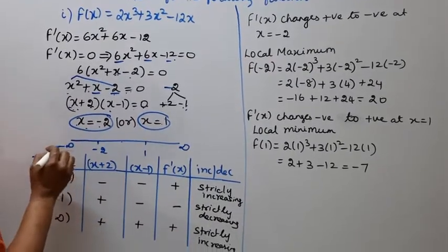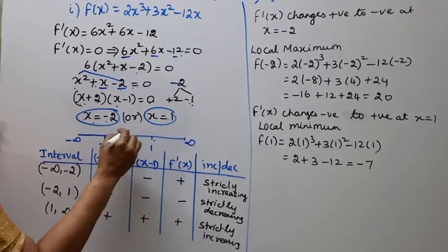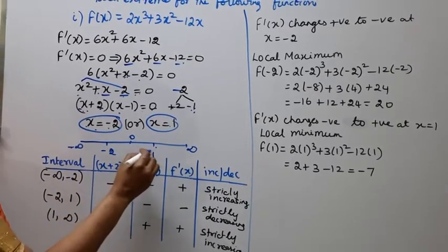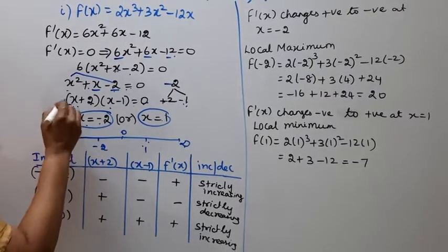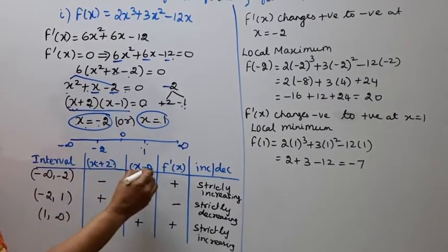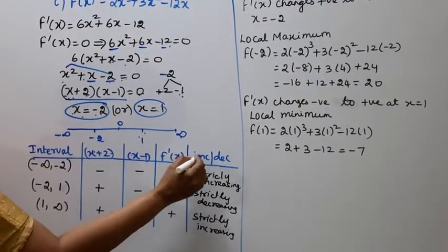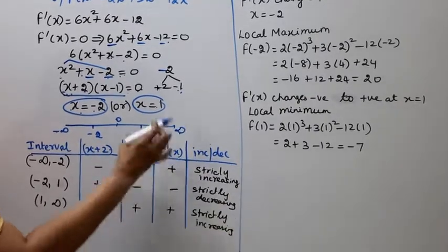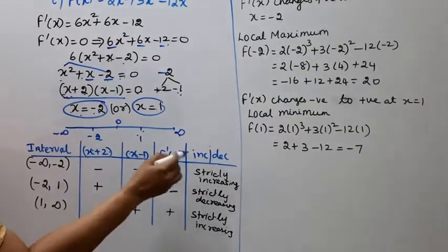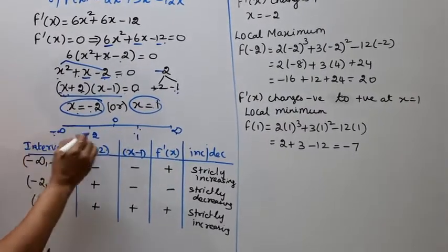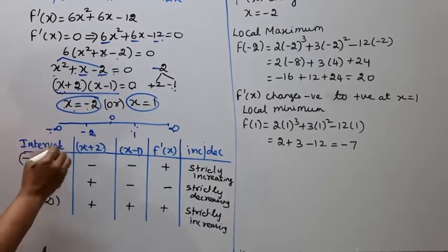Now we have interval minus infinity to infinity. This is minus 2, this is 1. Minus infinity to minus 2, minus 2 to 1, 1 to infinity. f dash of x equal to 0.